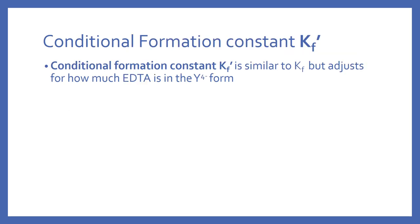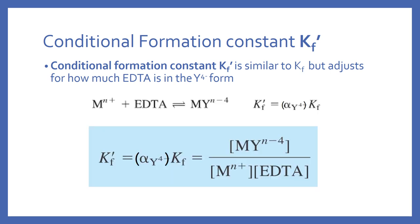You adjust your formation constant to the conditions — the pH. We have a conditional formation constant, Kf prime, where we take the fraction of EDTA in the Y4- form times the normal unadjusted Kf for the particular metal and EDTA.